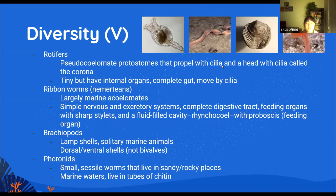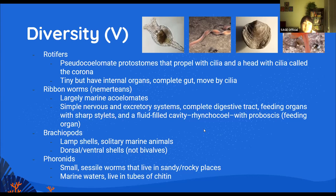Brachiopods, also known as lamp shells, are solitary marine animals. They are often confused with clams or bivalves, but they're not the same thing — clams open left and right while brachiopods open up and down. Phoronids are small worms.